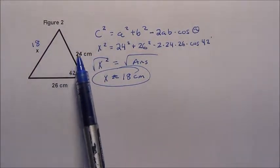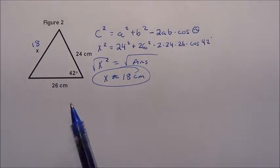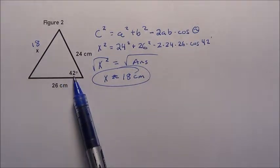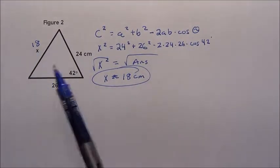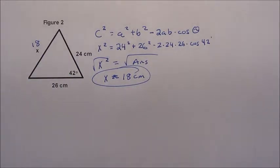And it makes sense. That's 18, 24, 26—they all seem to go. 42 is probably the smallest angle. It has to be. The side across from it is going to be the smallest side length. So yeah, my answer makes sense, and that's what we have for figure 2.